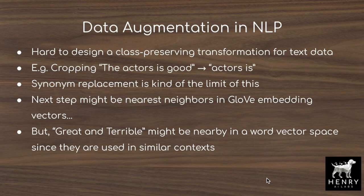Data augmentation has been really successful in computer vision with image datasets because it's really easy to come up with label-preserving transformations to image data. When we rotate a bird, it's still a bird; horizontally flip it, translate it, zoom in — it's still a bird.